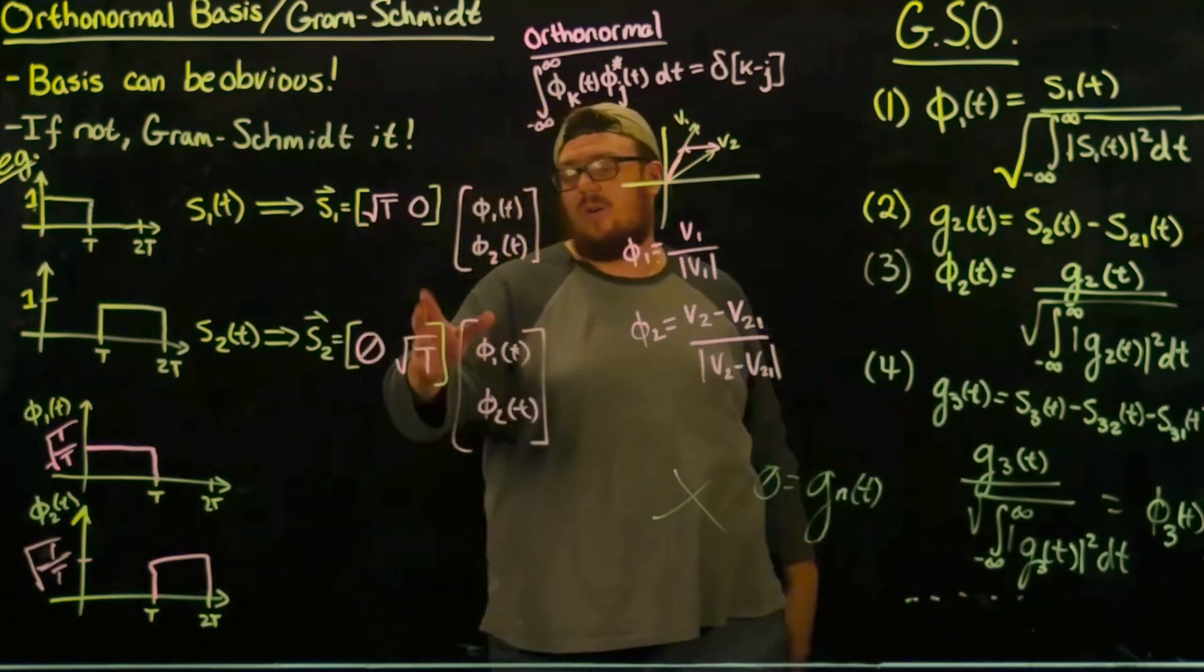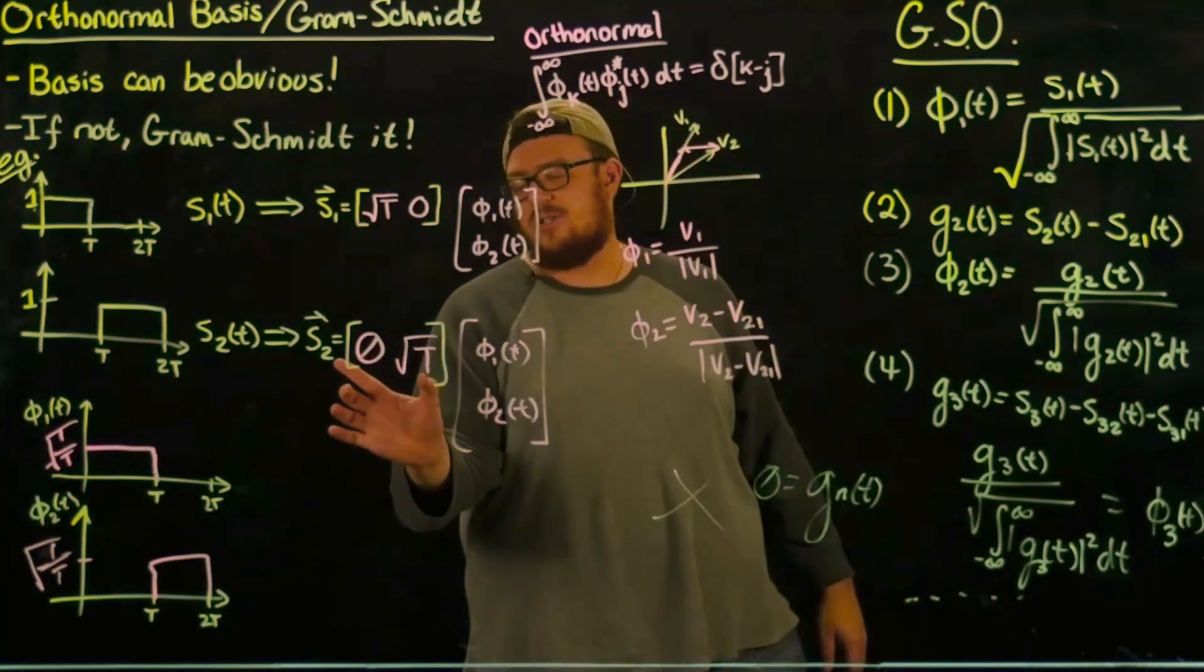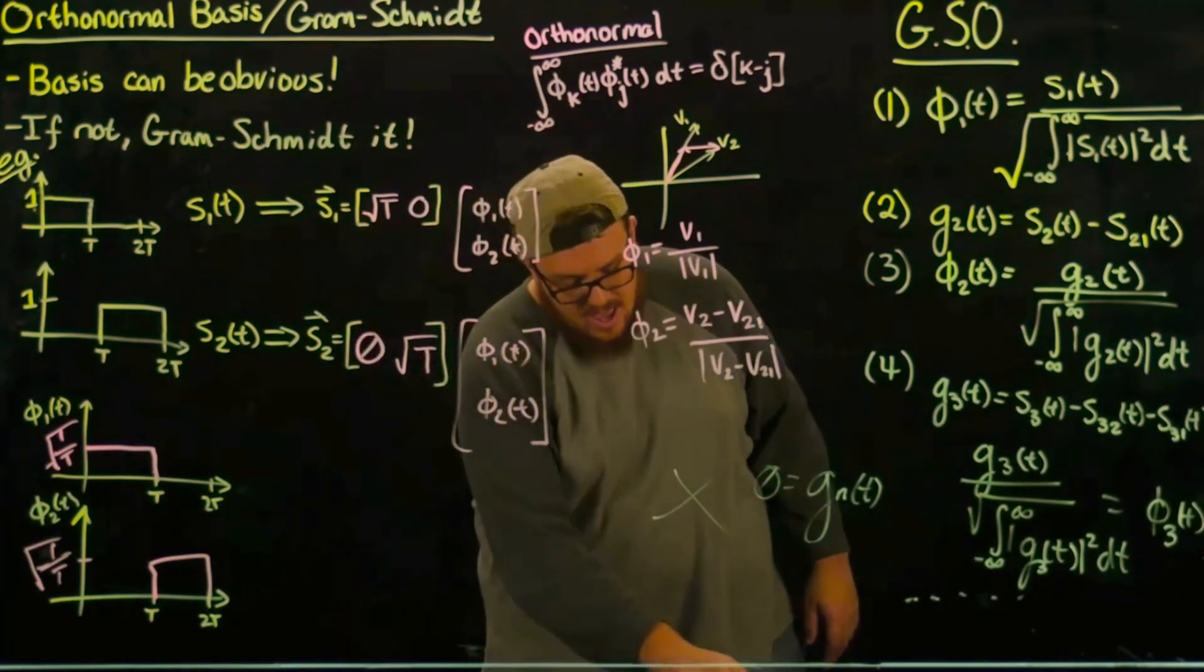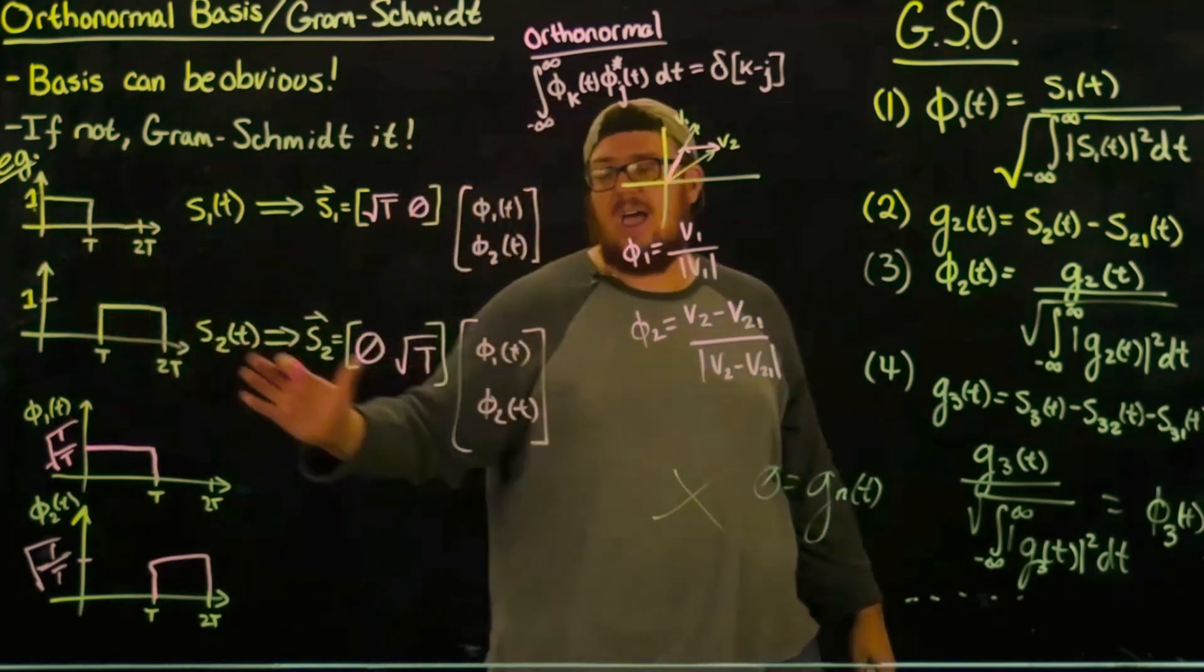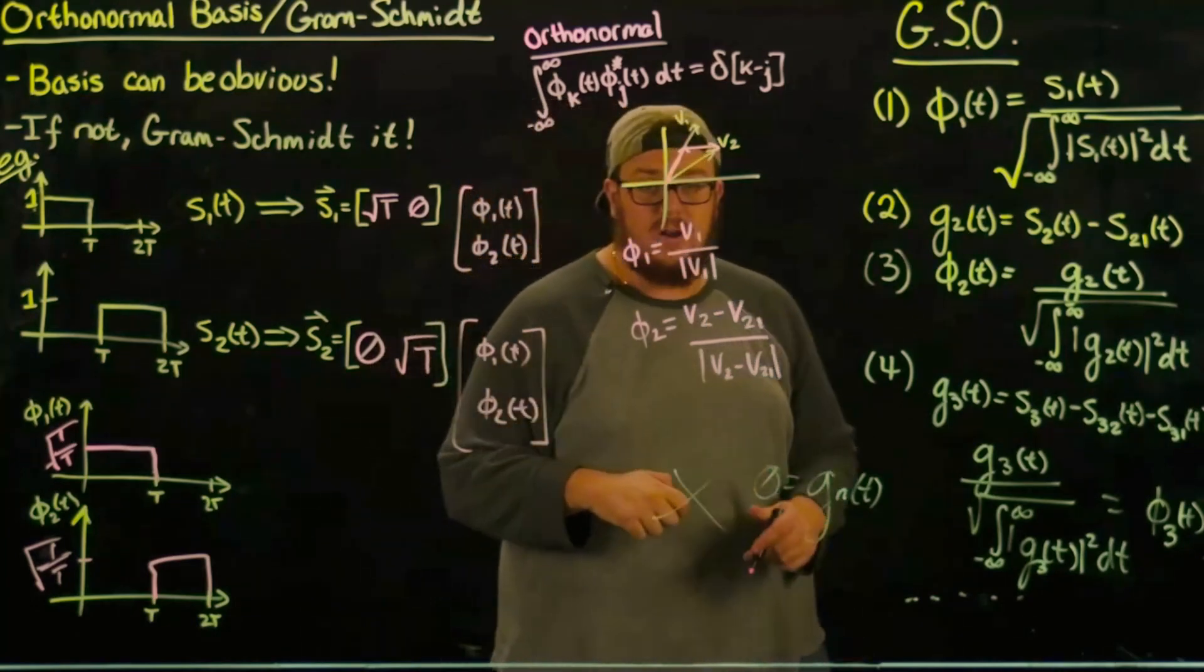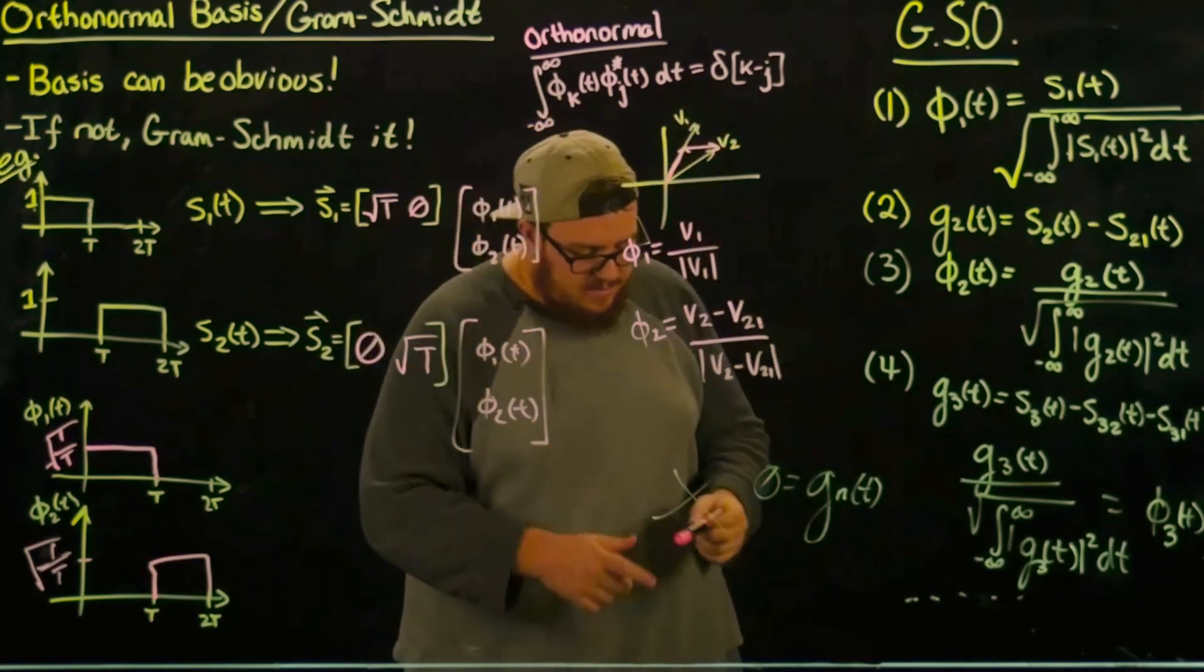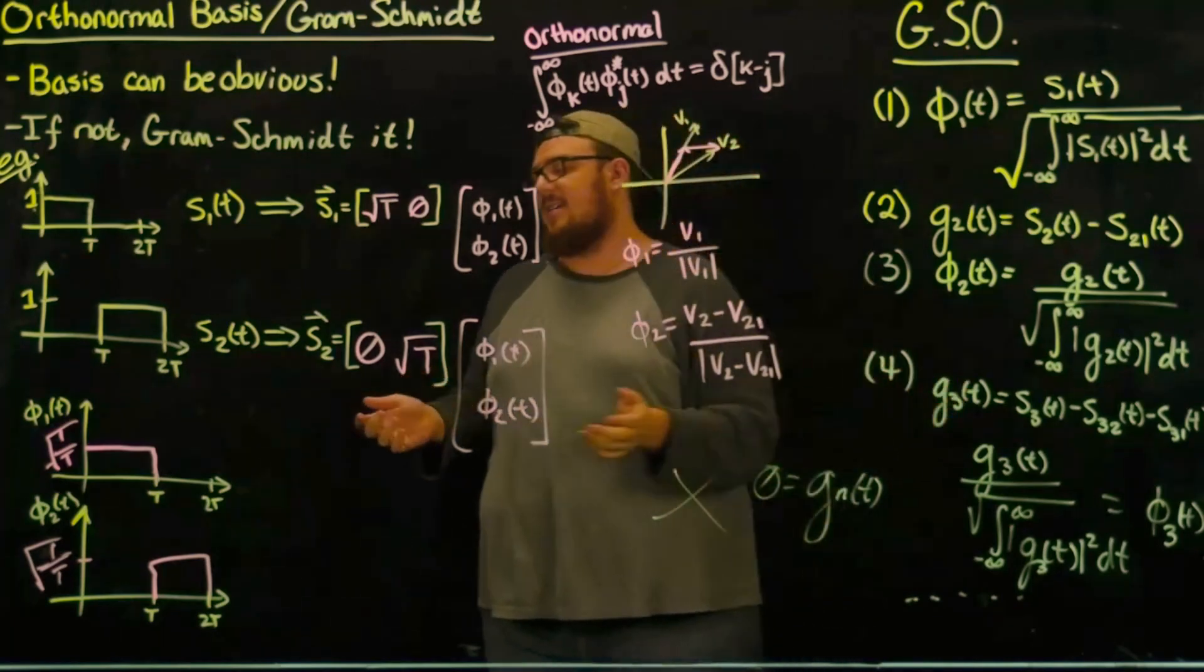And that's just basically a way to find an orthonormal basis to find these φ's by which you can project s onto them. So in order to get what these s vectors are, you have to do a projection of the signal s onto each one of these basis and then just take those numbers and those become the coordinates. And the Gram-Schmidt orthogonalization process is the way to find a basis set for any set of signals - this will work for no matter what set you use.